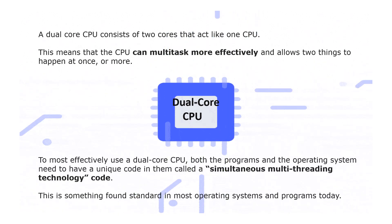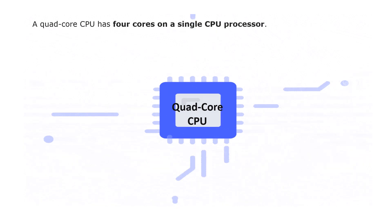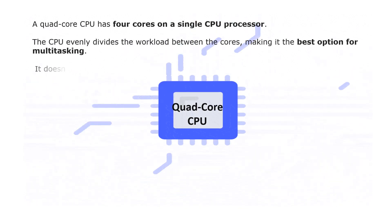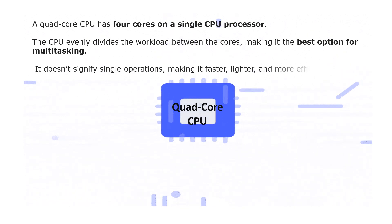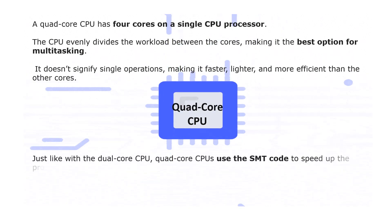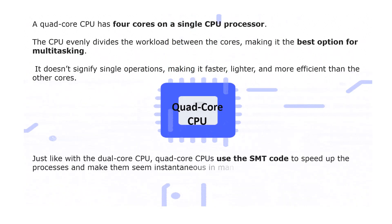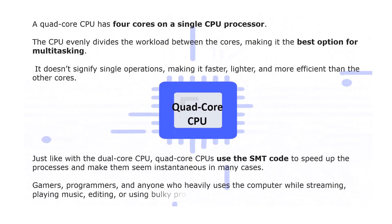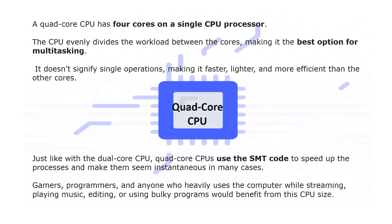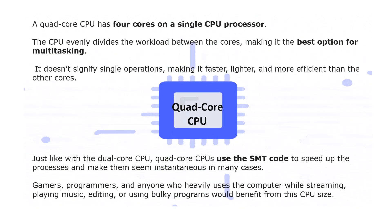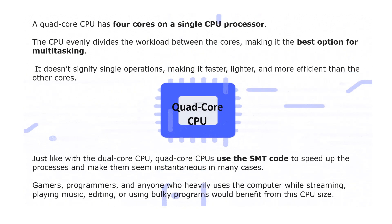Next is the quad core CPU. This has four cores on a single CPU processor. The CPU evenly divides the workload between the cores, making it the best option for multitasking. It doesn't slow down single operations, making it faster and more efficient than other cores. Just like the dual core CPU, the quad core CPU uses SMT code to speed up processes.